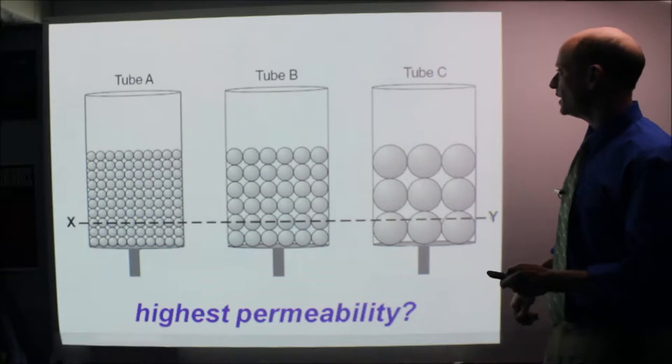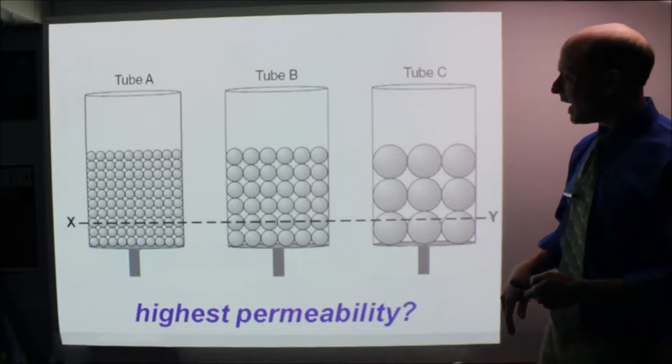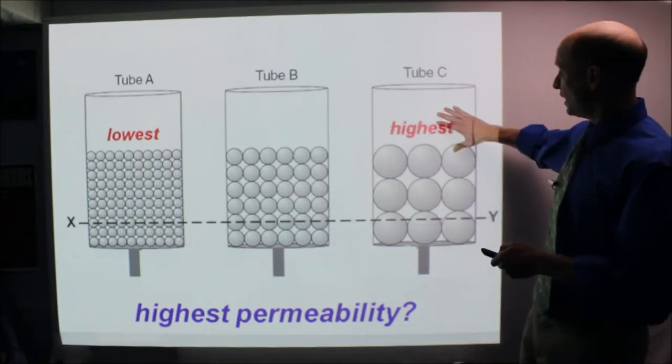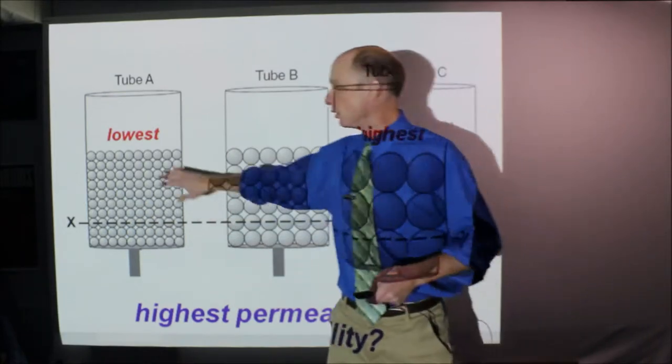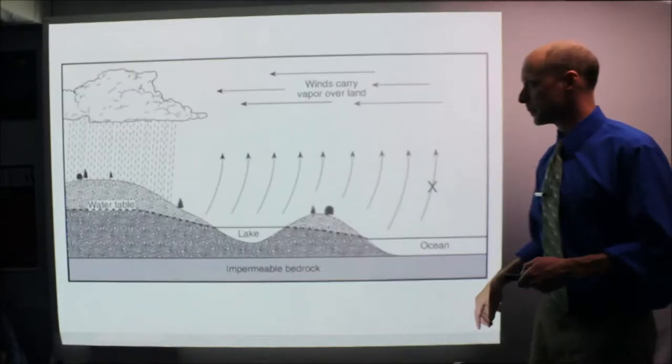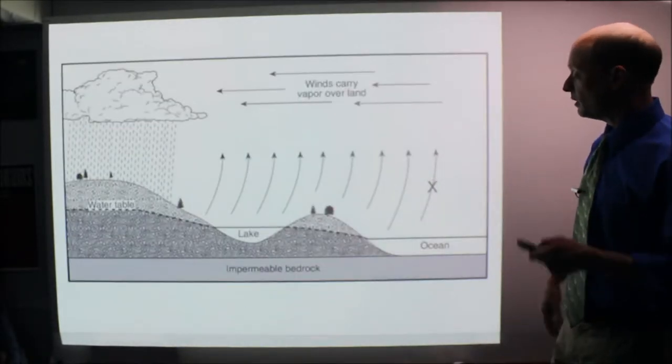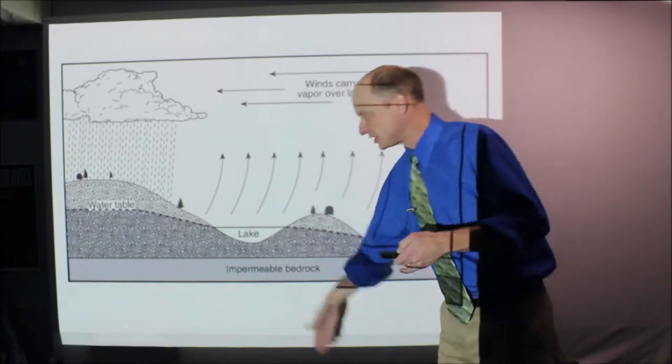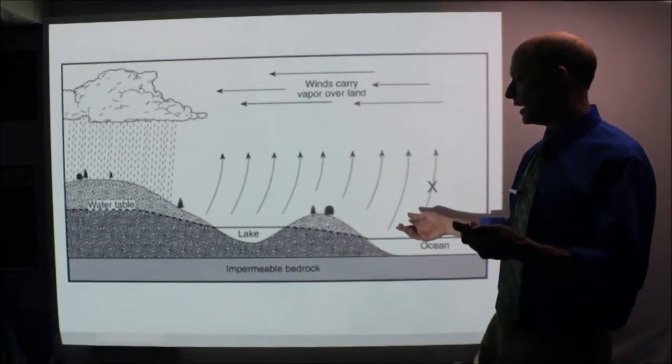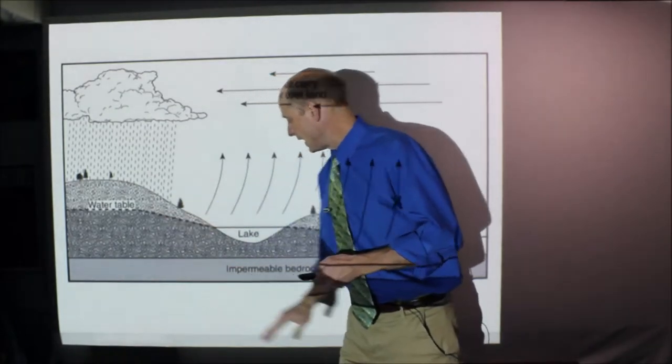So of these three, A, B, and C, which would have the highest permeability? Water flows through the fastest? It would be this one, the larger sediments, and the water would go through slowest on the smaller sediment one. What I want to point out here: it shows another diagram of a cross section looking down through the soil, and you have the water table here. It has the label here.